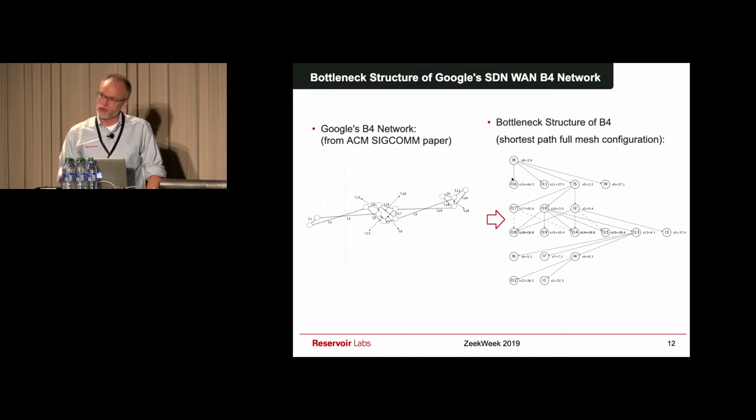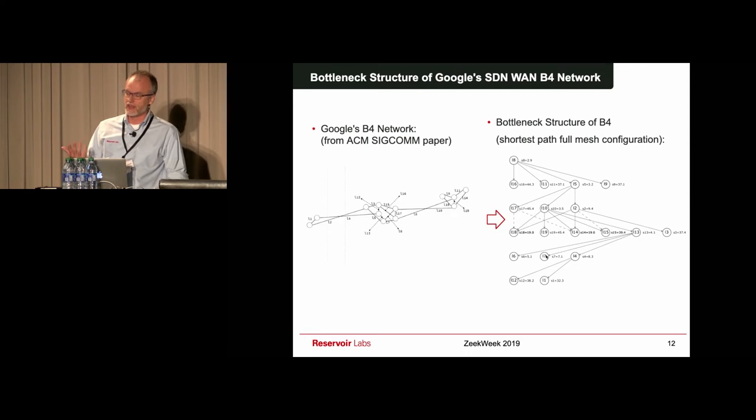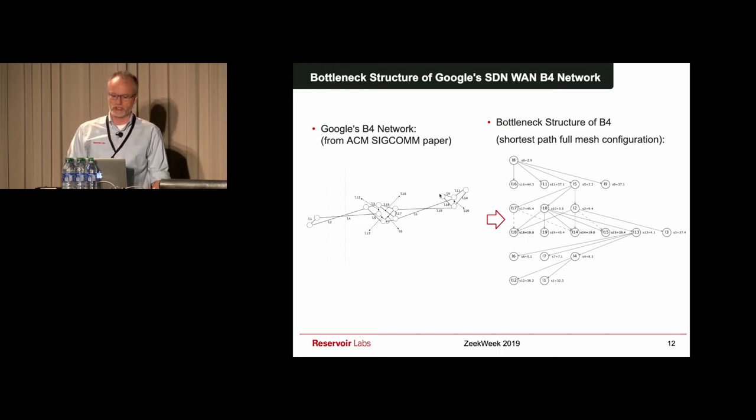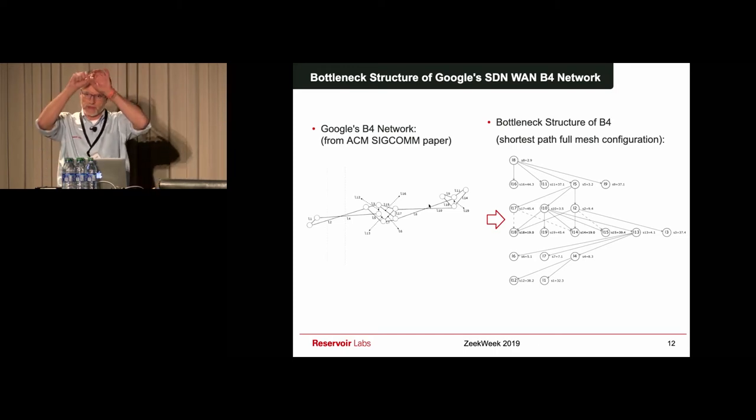Now, if we go to the root of the bottleneck structure, we find link eight. The graph is telling us that link eight has the highest influence because there's a path between link eight and any other link in the network. It means that link eight has the potential to affect the performance of any other link in the network. Where is link eight located? It's a transatlantic connection. Any perturbation on this link has ripple effects on the complete network.